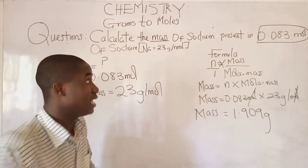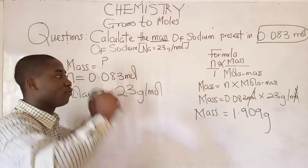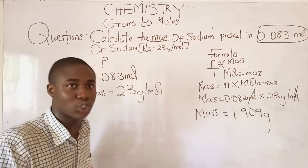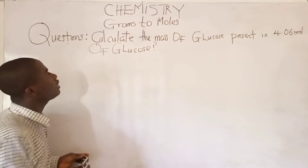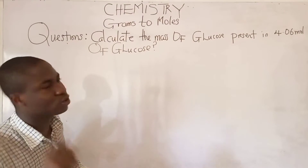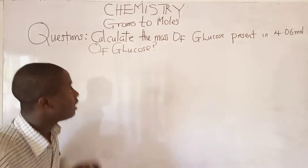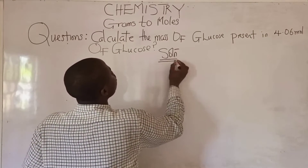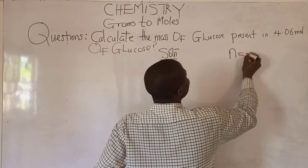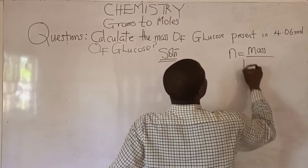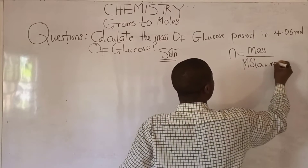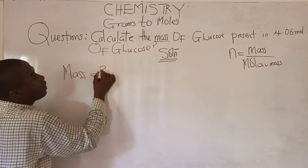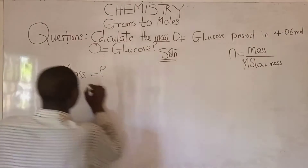So the mass of sodium present in 0.083 moles of sodium is 1.909 grams. This is how questions under this aspect are tackled. Now let's move to the third question. The question says: calculate the mass of glucose present in 4.06 moles of glucose. The formula is number of moles = mass over molar mass, and we need to calculate mass given 4.06 moles.